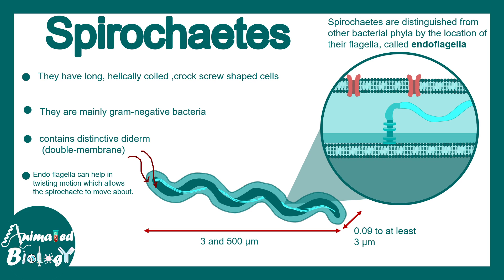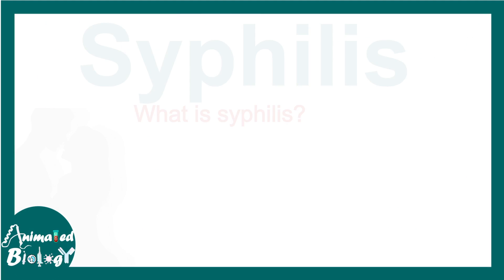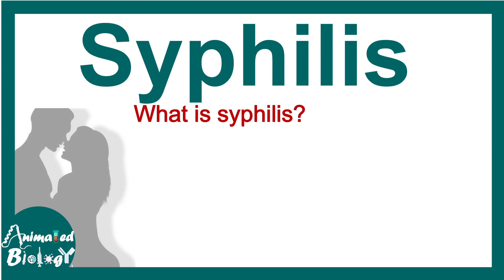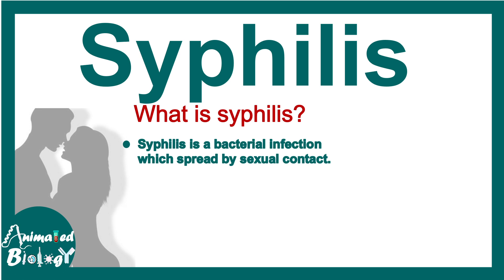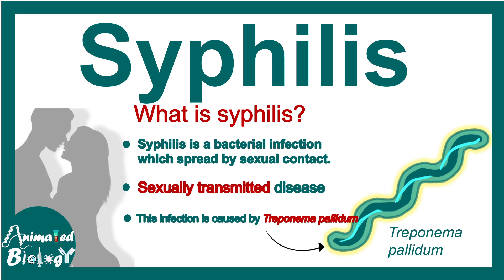Treponema pallidum is so important because it is the causative agent for the disease syphilis. Syphilis is a sexually transmitted bacterial infection, and Treponema pallidum is the key causative agent. That is why it is very important from a pathological point of view.